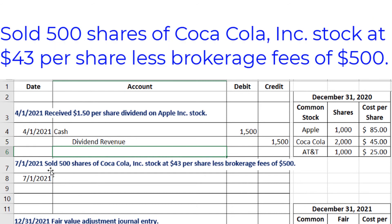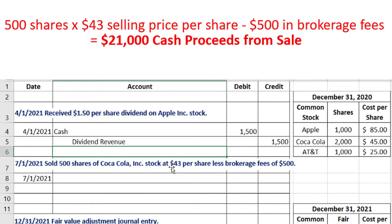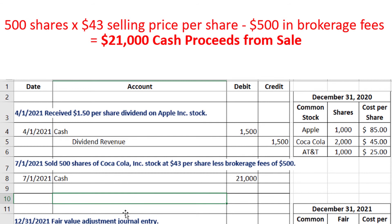Next, on July 1, 2021, we sold 500 shares of Coca-Cola Inc. stock at $43 per share, less brokerage fees of $500. The first step is to calculate how much cash the company is bringing in. We take the 500 shares sold, multiply by $43 per share, and then subtract the brokerage fees of $500, giving us a debit to cash of $21,000. Next, I'll skip a line for the gain or loss, and get the investment off our books by crediting the long-term investment AFS account. That amount is 500 shares multiplied by the original cost of $45 per share for Coca-Cola, which equals $22,500.